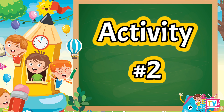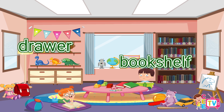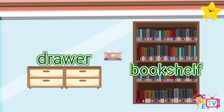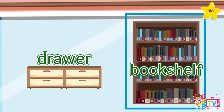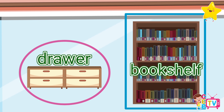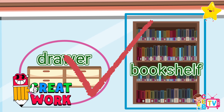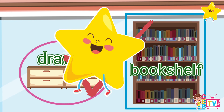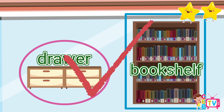Activity number two: Box the tall object and circle the short object. I will box the bookshelf because it is tall, and I will circle the drawer because it is short. You're doing great! You earned your second star! Yay!